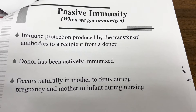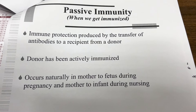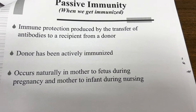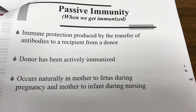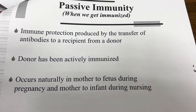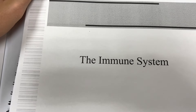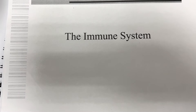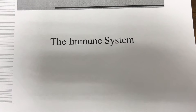Passive immunity is when we get immunized — immune protection produced by transfer of antibodies to a recipient from a donor who has been actively immunized. This occurs naturally from mother to fetus during pregnancy, and from mother to infant during nursing. That's it for part two of the immune system slides — hope you all enjoyed. Catch you on the next one, which should be the final review for the reproductive and immune system sections.